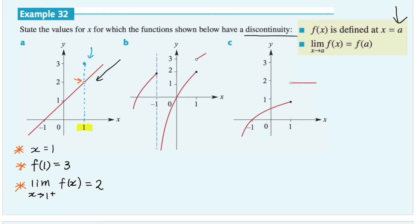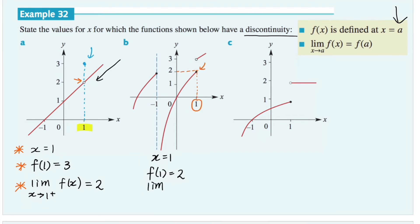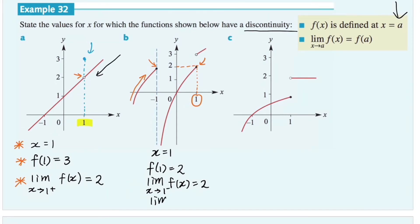In question b, there is a discontinuity at x equals 1 again. At x equals 1, the function f(1) equals 2. The limit of the function when x is approaching 1 from the negative side equals 2 also. As we approach x equals 1 from the negative side, the corresponding y value is also 2, represented by the closed dot. However, the problem is that the limit when x is approaching 1 from the positive side equals 3, so we say that this function has a discontinuity at x equals 1.